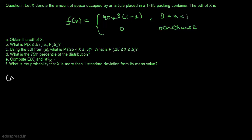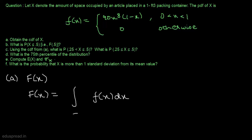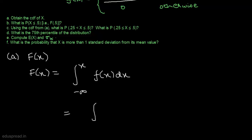So in part A, we have to obtain F of x. We know that F of x is equal to the integration of f of x dx from minus infinity to x. As you can see, f of x equals this expression for values of x between 0 and 1. So we can write this as the integration of 90x raised to the power 8 multiplied by 1 minus x, dx from 0 to x.